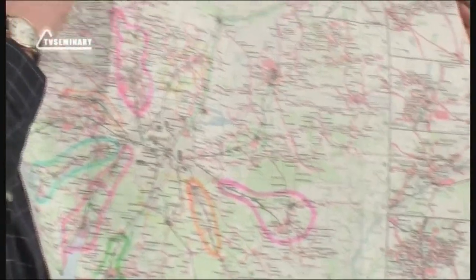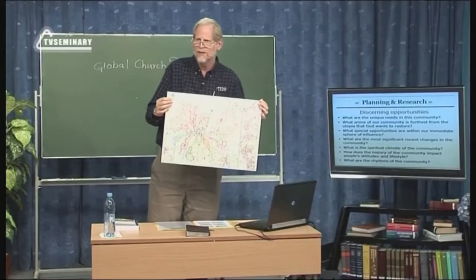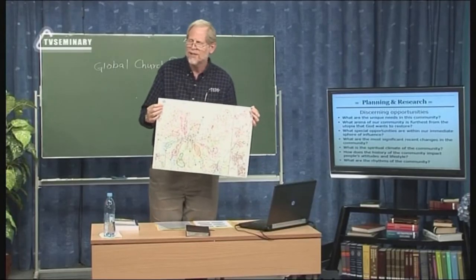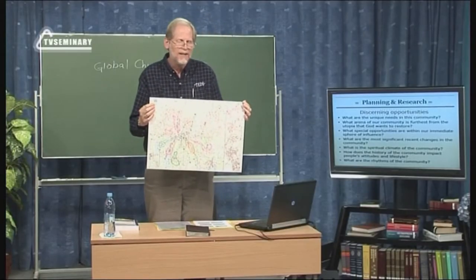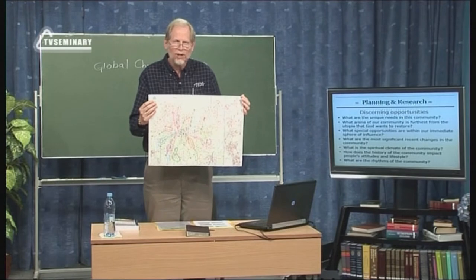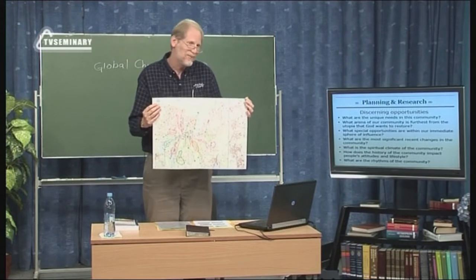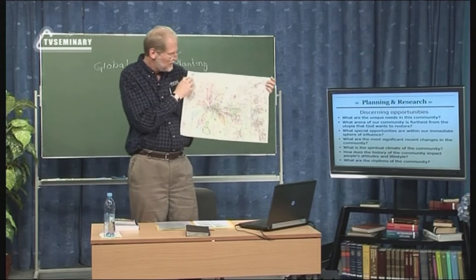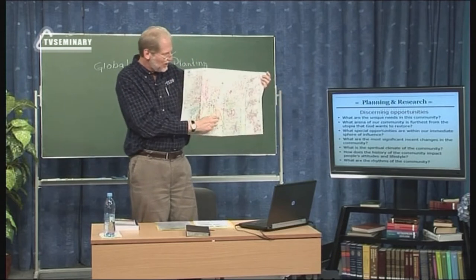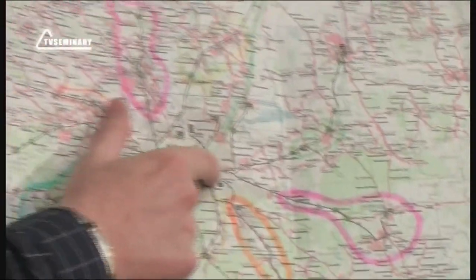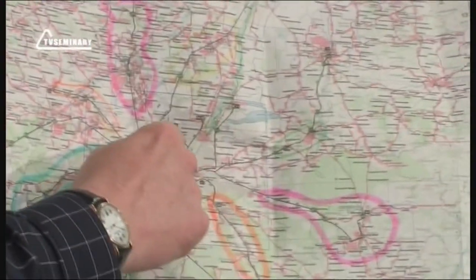One of the things about the way this city is structured and the mentality in the city is that people think along those rail lines towards downtown. In other words, if we were to start a church here, somebody from this town, even though it's closer, would probably not think to drive across this way to go to church. Even though it might be farther, they'd rather commute into the city.